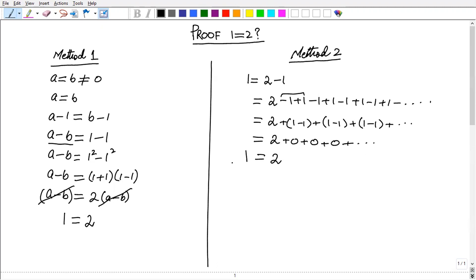So both of the methods give you 1 equals 2, but actually 1 is not equal to 2. So there are some mistakes in both of the methods. I will appreciate you if you identify the mistake.